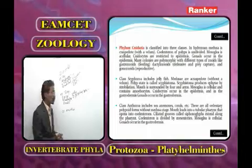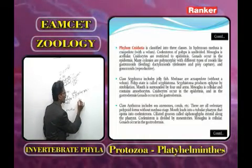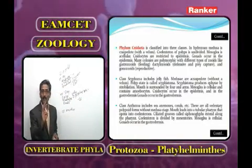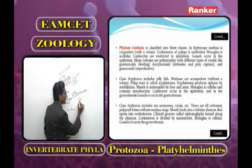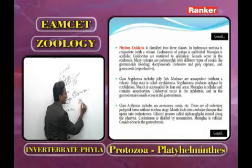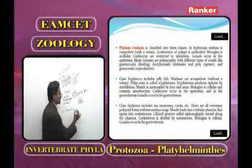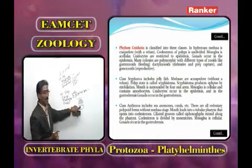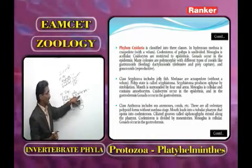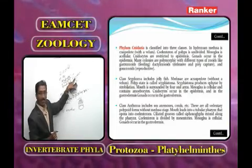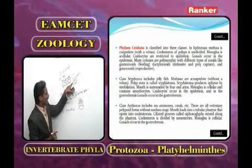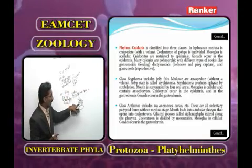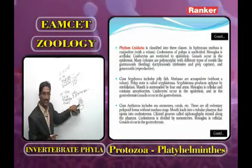In Scyphozoa the mouth is present with four oral arms. The coelenteron is divided into gastric pouches, followed by radial canals and circular canals. Nematoblast cells are present in epidermis, endodermis, and on gastric filaments.